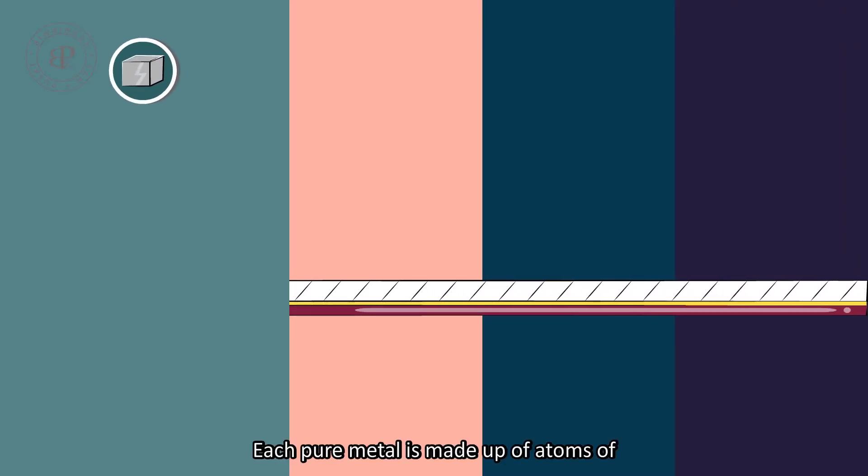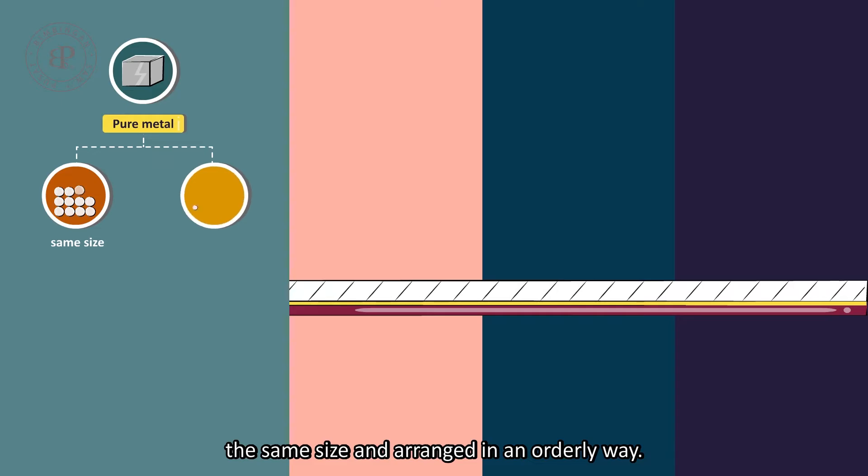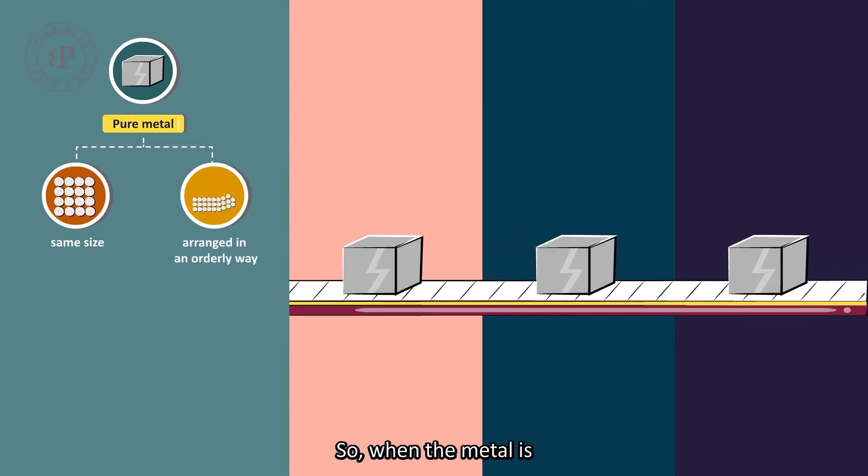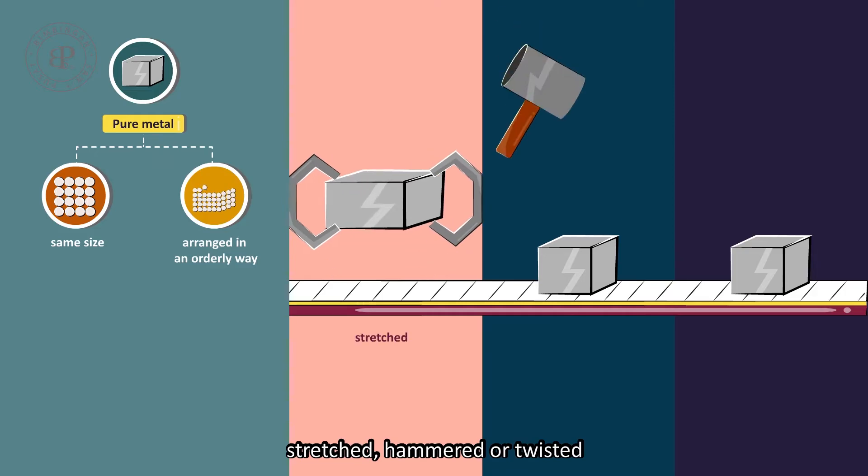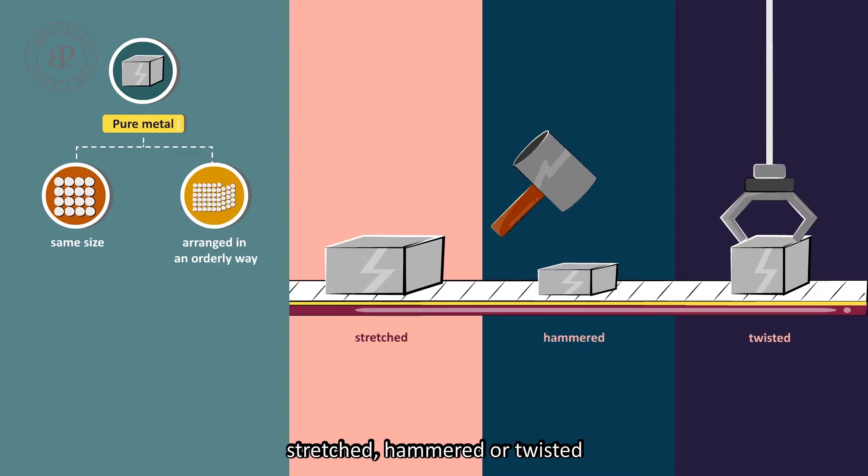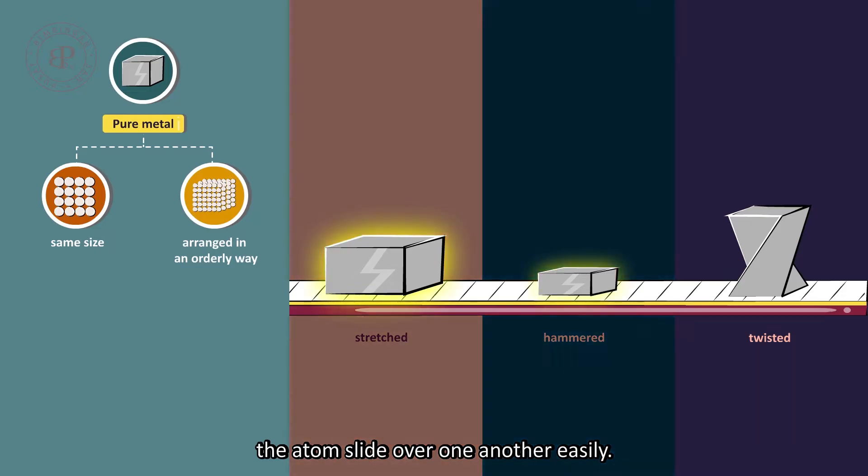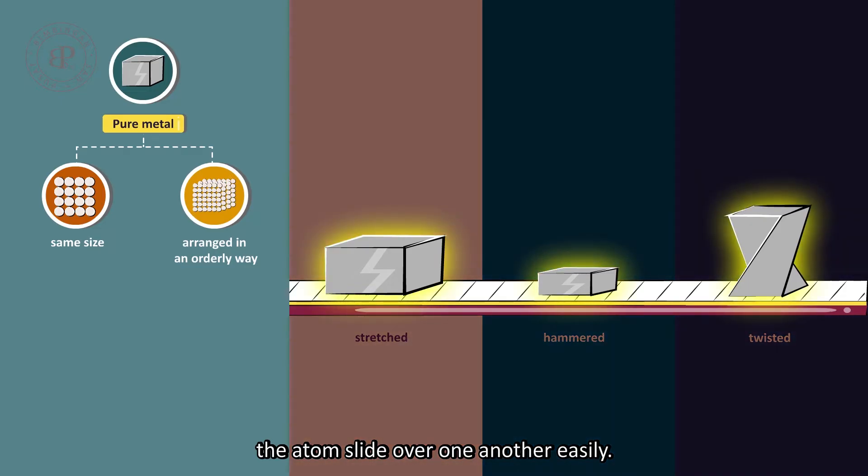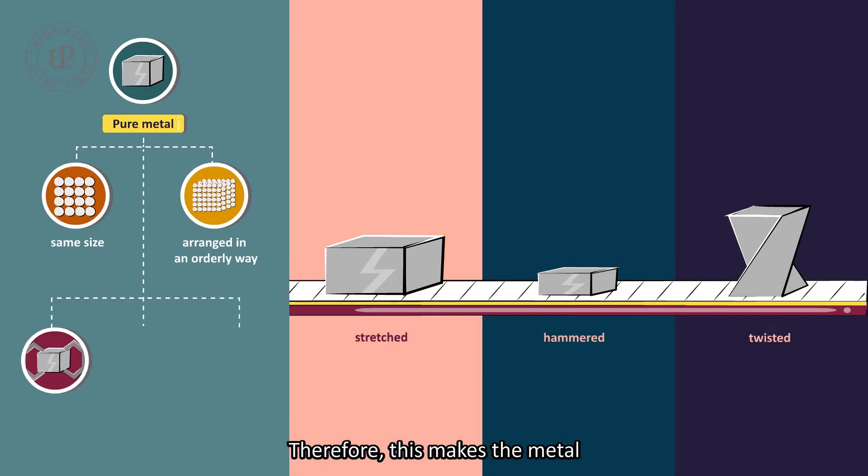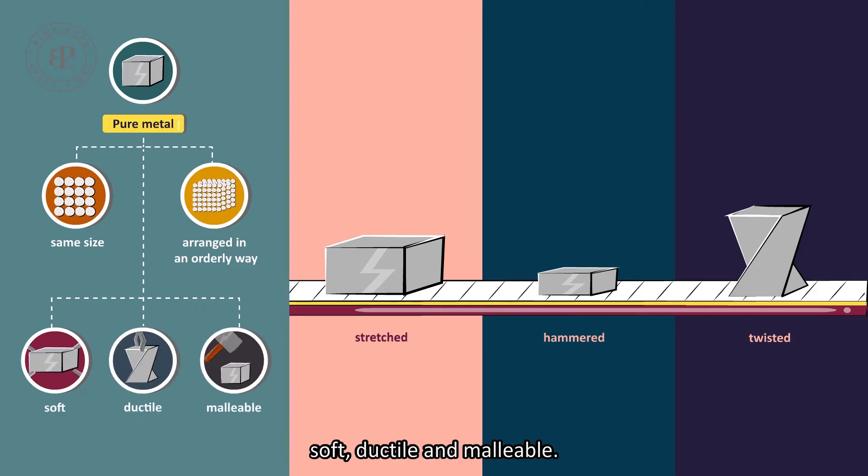Each pure metal is made up of atoms of the same size and arranged in an orderly way. So when the metal is stretched, hammered or twisted, the atoms slide over one another easily. Therefore, this makes the metal soft, ductile and malleable.